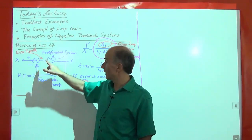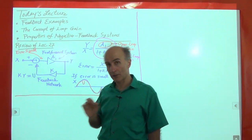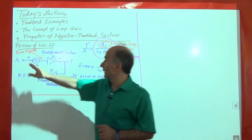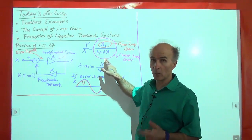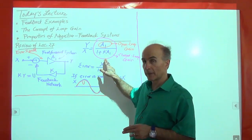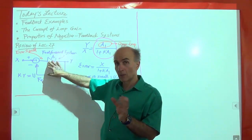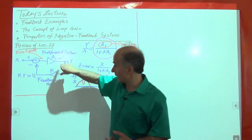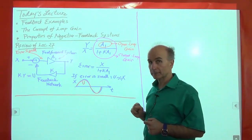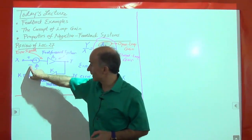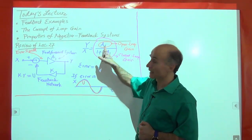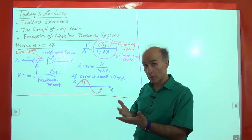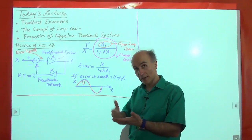We called the output of the subtractor — X minus U — the error signal. We calculated the transfer function from input to output and saw that it is A1 divided by 1 plus K·A1. A1 is the original open-loop gain, and this whole expression is the closed-loop gain because we have closed the loop around the amplifier. Because K and A1 are positive and there is a negative sign in the subtractor, the closed-loop gain is less than the open-loop gain — we are compromising some gain, but presumably there are benefits that justify this reduction.